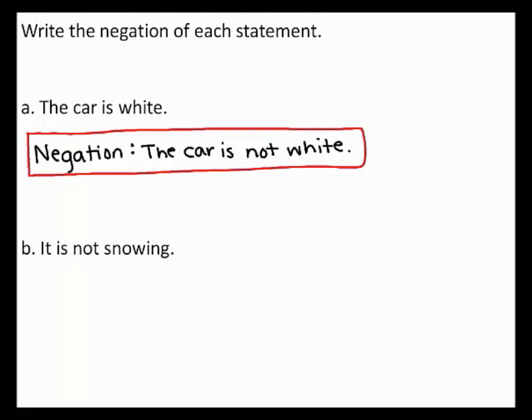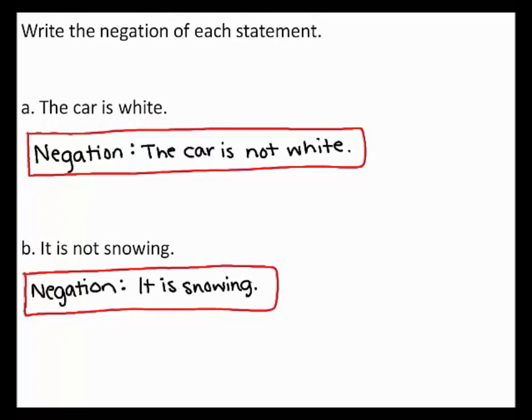In part B, the opposite of the statement it is not snowing is it is snowing. Therefore, the negation of this statement is it is snowing.